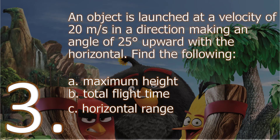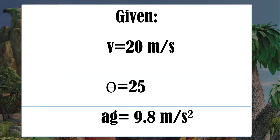Example number 3: an object is launched at a velocity of 20 meters per second in a direction making an angle of 25 degrees upward with the horizontal. Find: A) maximum height, B) total flight time, and C) horizontal range. Given: velocity equals 20 meters per second, theta equals 25 degrees, and acceleration due to gravity equals 9.8 meters per second squared.